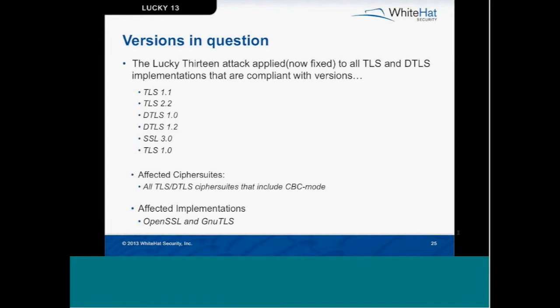The attacks apply to all TLS and DTLS implementations that are compliant with TLS 1.1 or 1.2, or DTLS 1.0 or 1.2, and they also apply to implementations of SSL 3.0 and TLS 1.0 that incorporate countermeasures to past padding oracle attacks. There are some non-compliant implementations and the researchers state that variations of these attacks may apply to those as well. All TLS and DTLS cipher suites which include cipher block chaining mode encryption are potentially vulnerable to the Lucky 13 attacks.